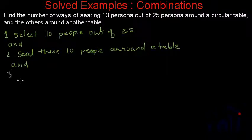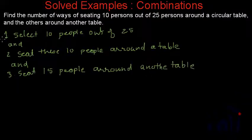And then we have to do one more thing. We have to seat the remaining people, which is 25 minus 10, so 15 people, around another table. We have to do these three tasks and there is an 'and' between them. That means we have to multiply all the results which we get while performing the first task, the second task, and the third task.